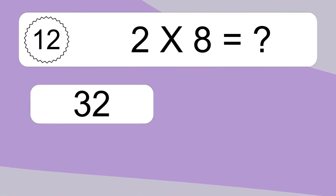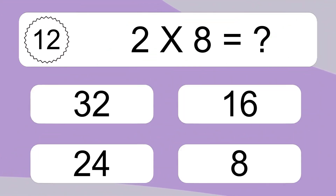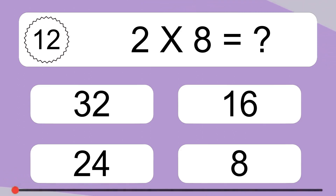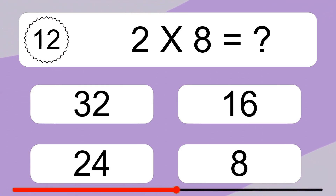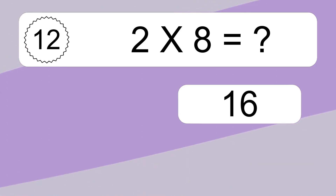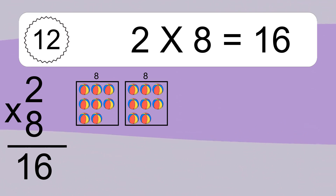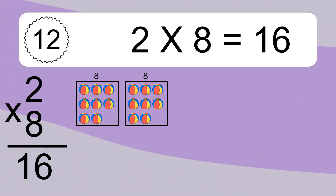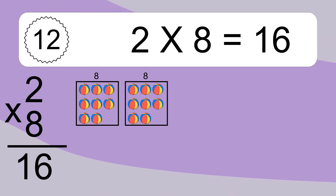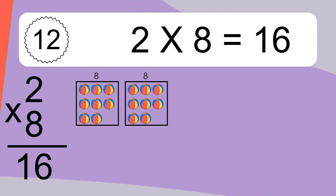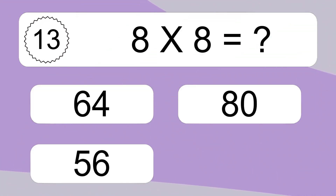Two times eight equals what? Two times eight equals sixteen. We have two boxes, and each box has eight colorful balls inside. If you count all the balls in all the boxes together, you will have two times eight balls. This equals sixteen balls.